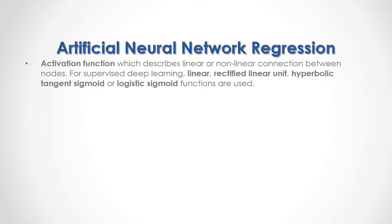An Artificial Neural Network has an activation function which describes the linear or nonlinear connection between nodes. For supervised deep learning, linear, rectified linear unit, hyperbolic tangent sigmoid, or logistic sigmoid functions are used. As a formula, here we have the example of a linear activation function in which the activation of the hidden layer is equal to that hidden layer.